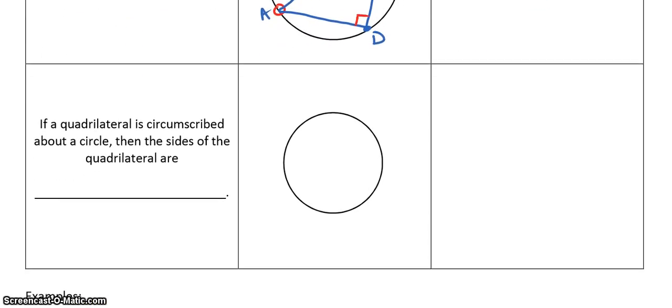Okay? This says that if a quadrilateral is circumscribed about a circle, then the sides of the quadrilateral are tangent to the circle. Tangent to the circle. Alright? Now, this word circumscribed means that the quadrilateral is drawn outside of the circle. Okay? So, the circle is actually inscribed in the quadrilateral. So, it would look something like this. And, this might take me a few tries to draw. So, you might want to give me a second before you decide to draw it.